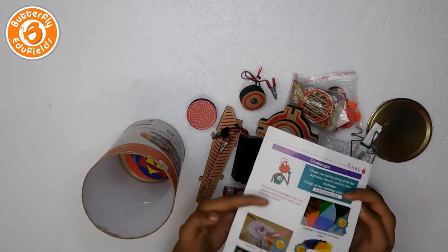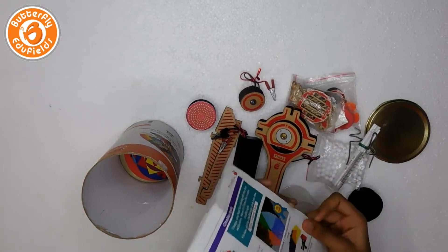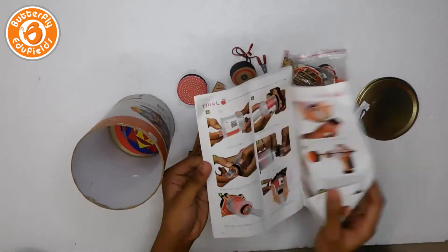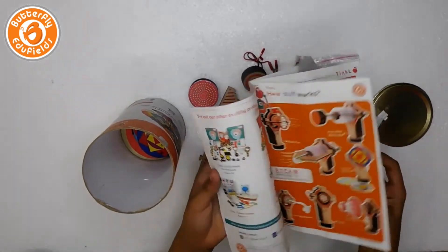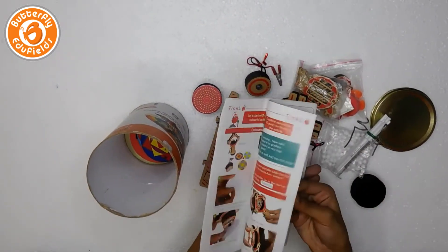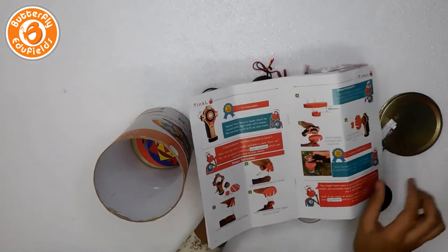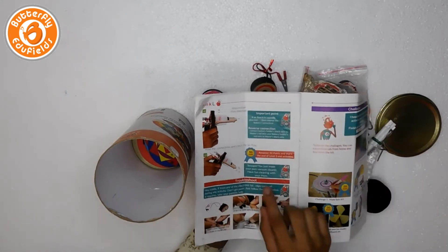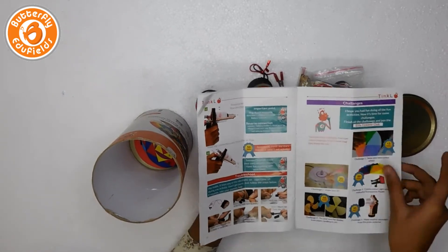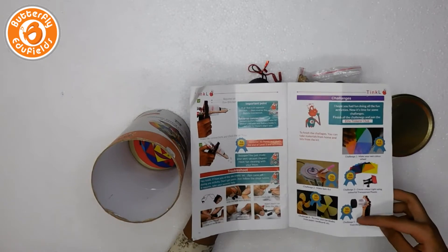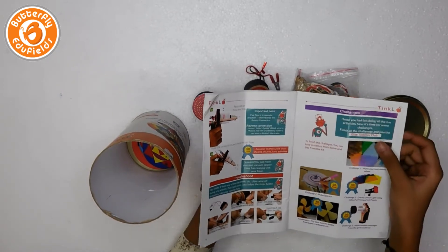There's a clear instruction manual inside. If you make each project, you will get points—10 points for some, 50 points for others. There are also challenges which you can do by joining the Allied Tinker Club.